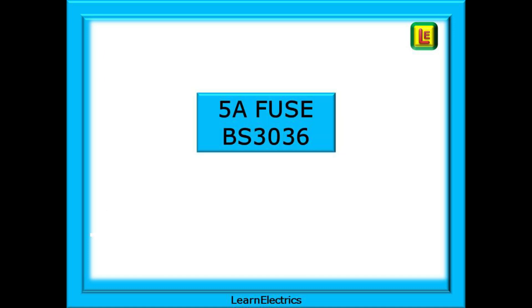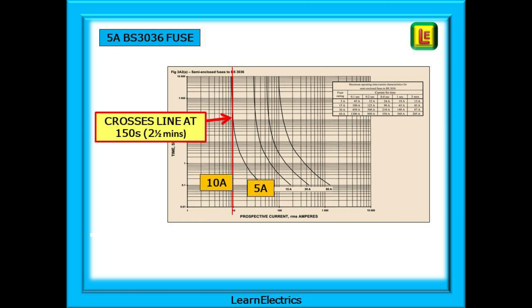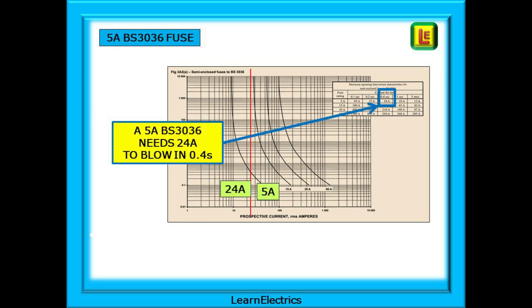We can stay with 5 amp fuses and look at the once very common BS3036 rewireable fuse. You will still find lots of these across the UK in older domestic and commercial installations. Looking at this chart on page 412 you will see the familiar response curves. But look now even at 9 amps of fault current the 5 amp fuse will not blow. 10 amps of current will cause it to operate but only in 150 seconds or two and a half minutes. This is not going to achieve our aim of tripping for safety. Looking at the top right table we can easily see that we need at least 24 amps of fault current to achieve a 0.4 second disconnection time.